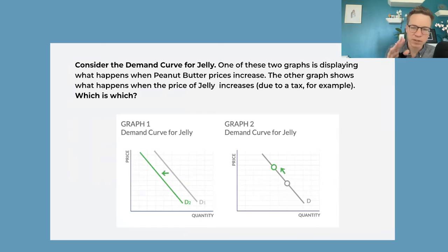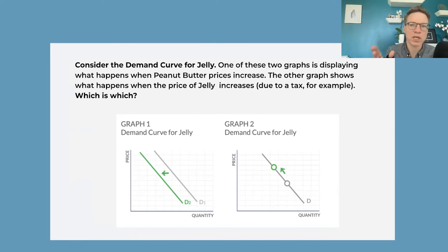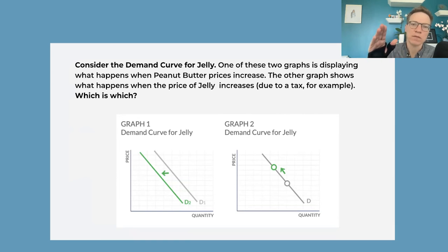We're going to spend the last part of class going through this, because people always get confused — they think a curve shifts when sometimes we're just moving along the curve. So if you have a price change in the good itself, you're just moving along the curve. If the price of jelly goes up, the quantity demanded goes down for jelly — the curve itself doesn't shift. But students always get confused: 'Oh, the price of jelly has gone up, people are going to buy less, so the curve has shifted back.' No. This is what the demand curve is describing. The relationship between price and quantity — it's these other factors that determine the demand curve. When they change, the curve shifts.